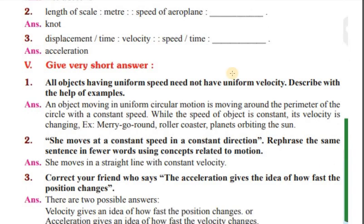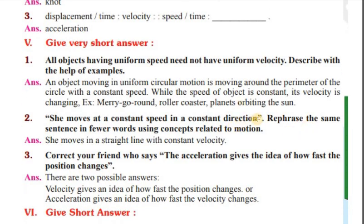Short answer: All objects having uniform speed need not have uniform velocity. An object moving in uniform circular motion moves around the perimeter of a circle with constant speed, while its velocity is changing. Examples include a merry-go-round, roller coaster, and planets orbiting the sun. She moves in a straight line with constant velocity.